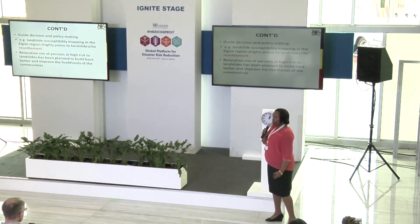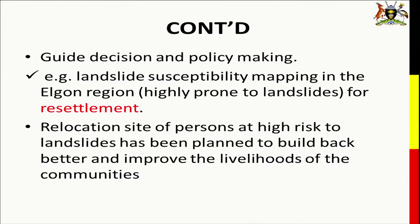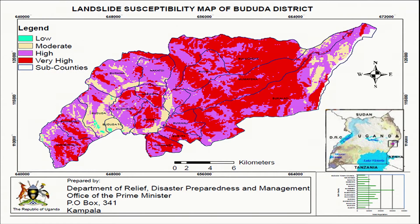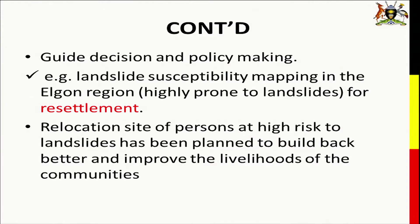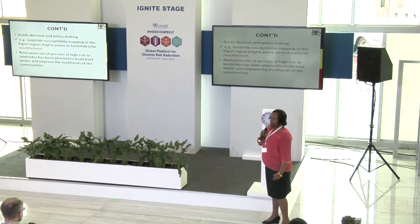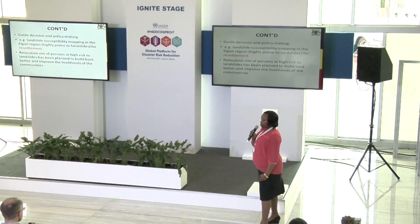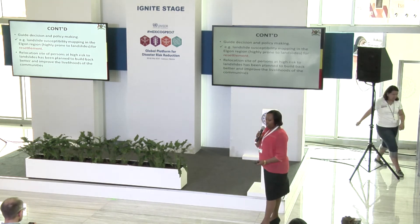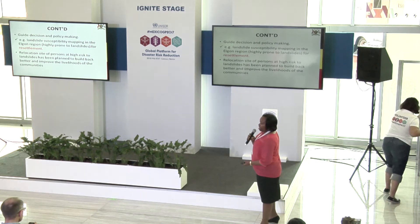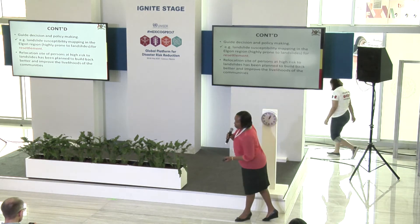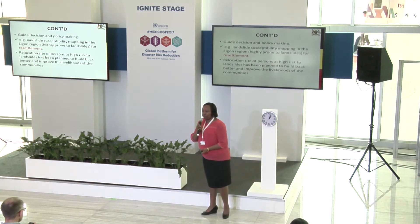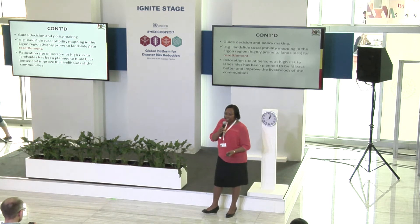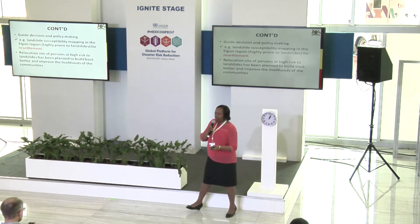Risk assessments also guide decision-making and policy. For example, the landslide susceptibility map has been our guide on resettlement in the eastern part of the country. We are conducting a resettlement program relocating communities at high risk of landslides to a safer area. Under the Sendai framework, we need to build back better — whatever program we conduct, we need to do a risk-informed decision.